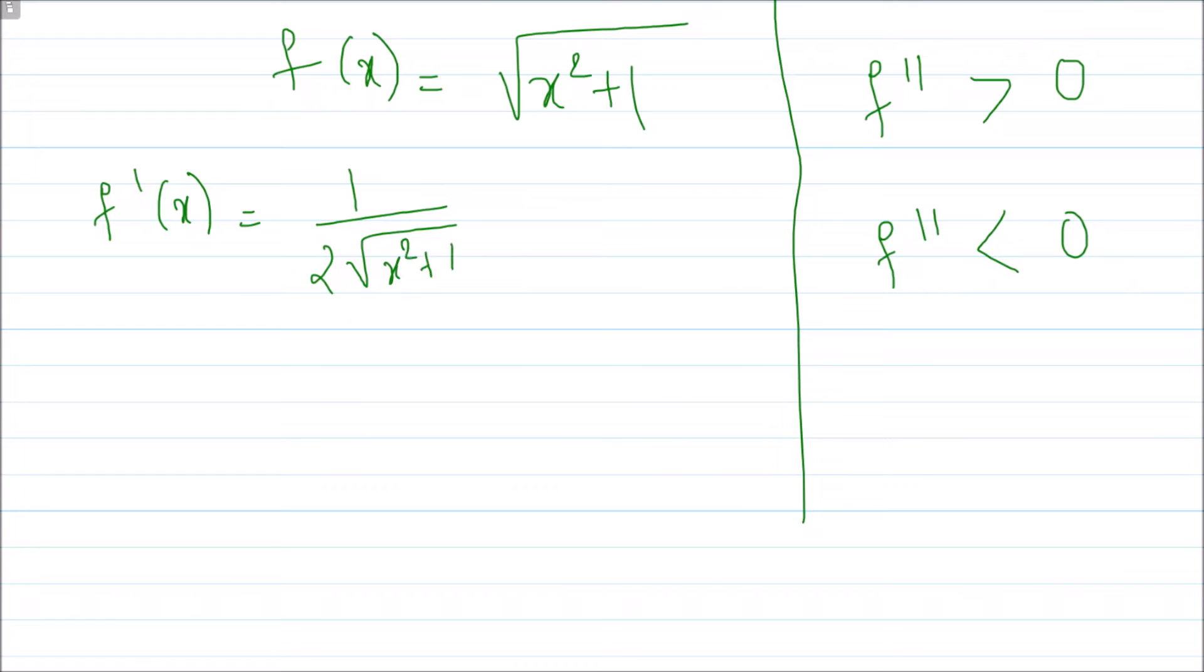Now if you take the double derivative of the function, you need to apply the quotient rule of derivative: denominator times derivative of numerator minus numerator times derivative of denominator, whole divided by square of denominator.